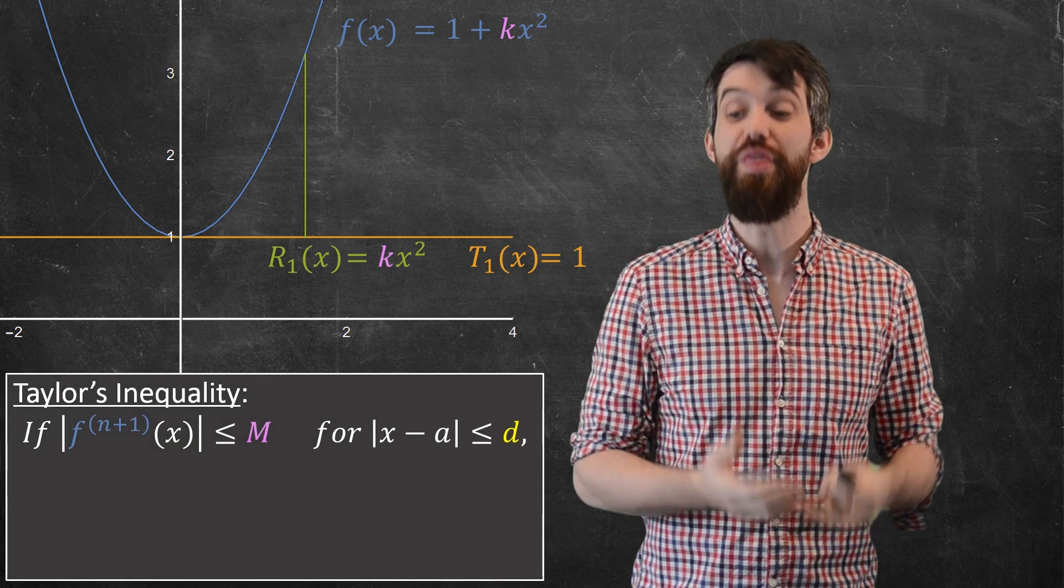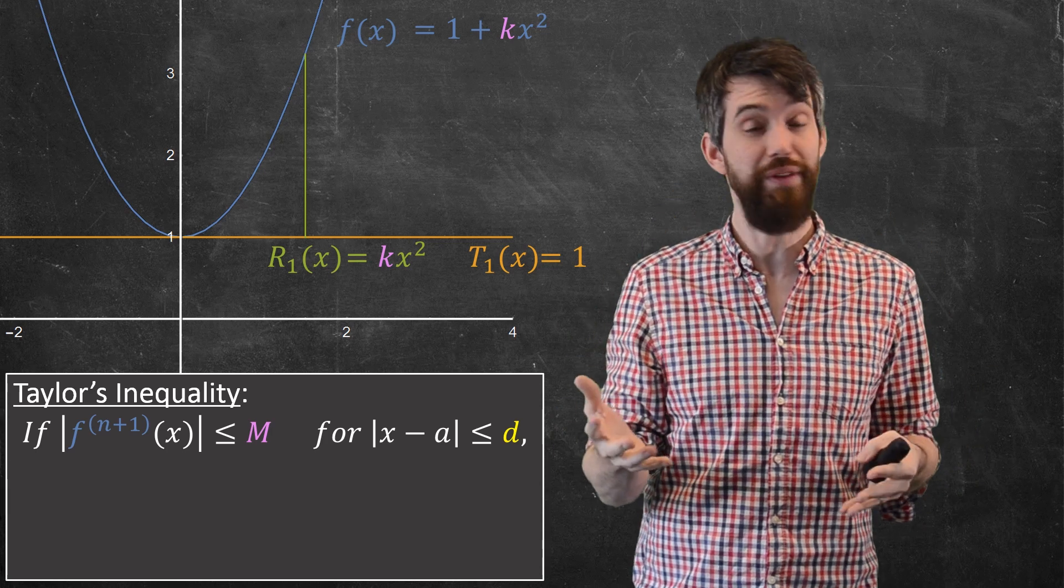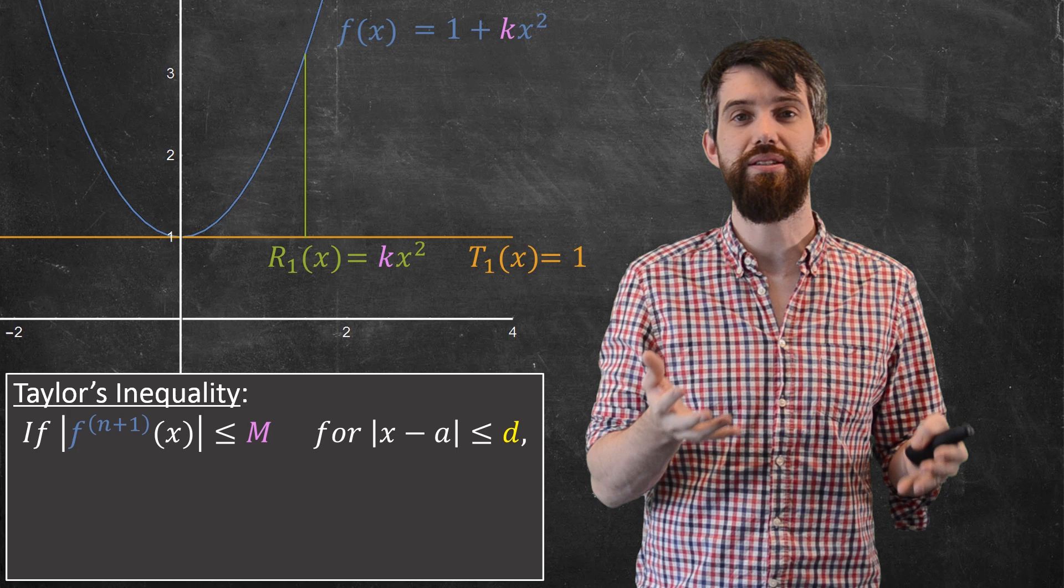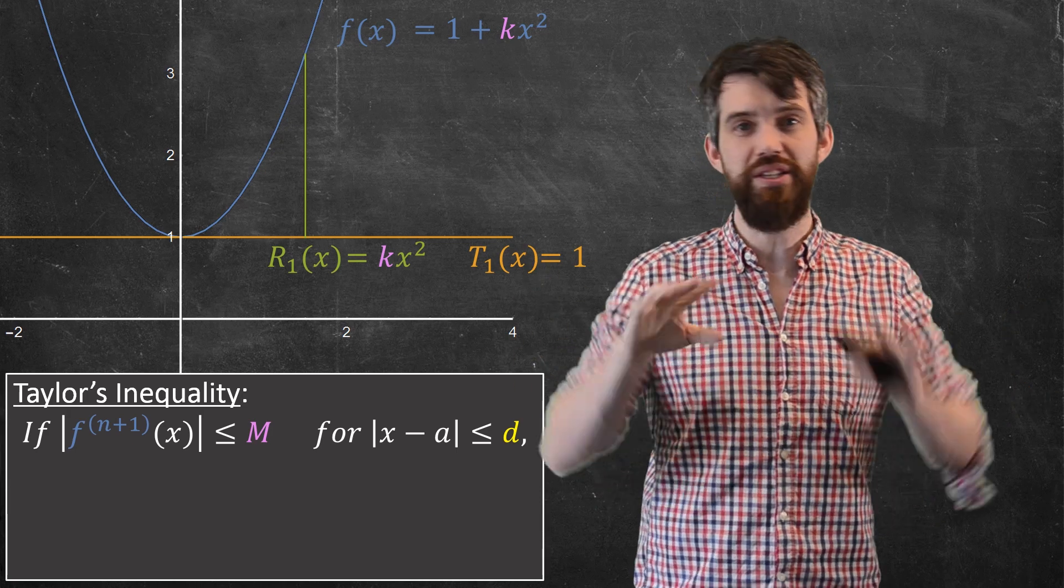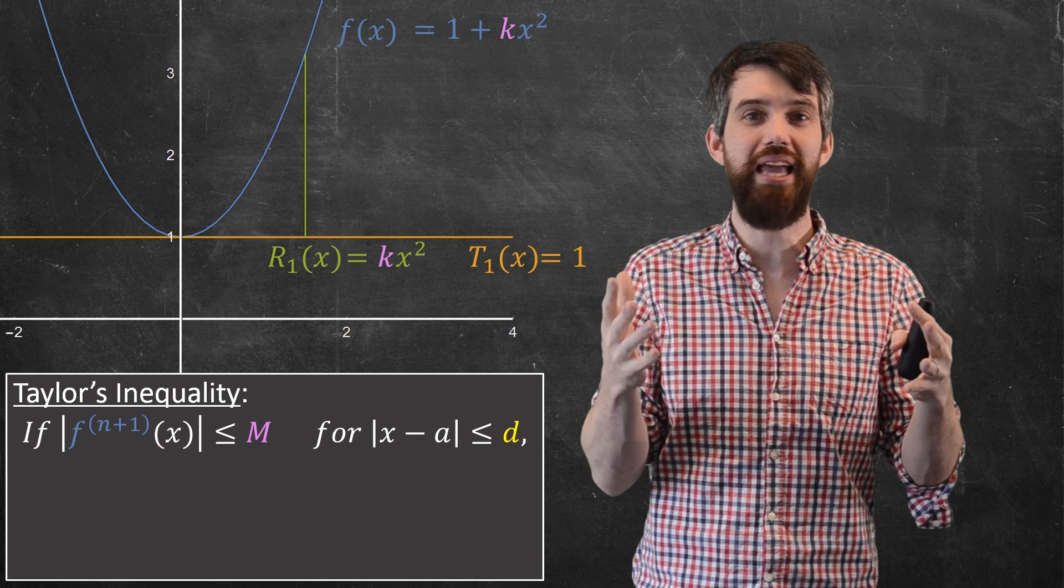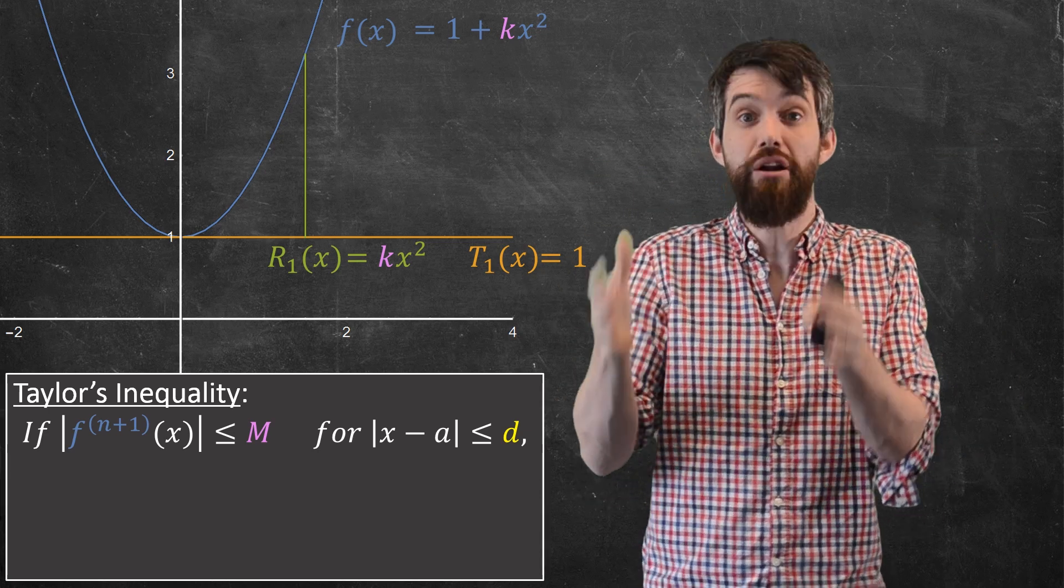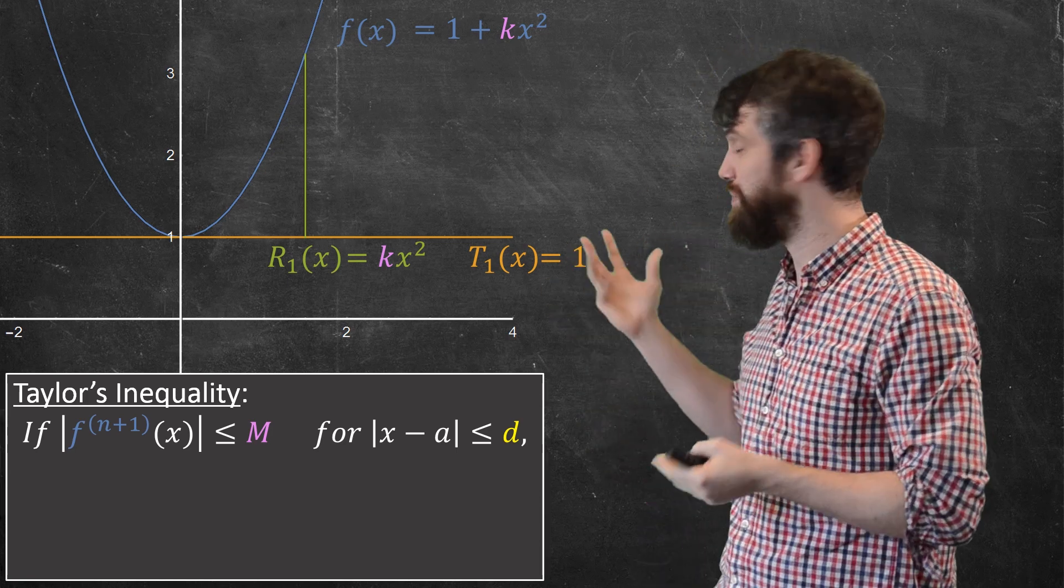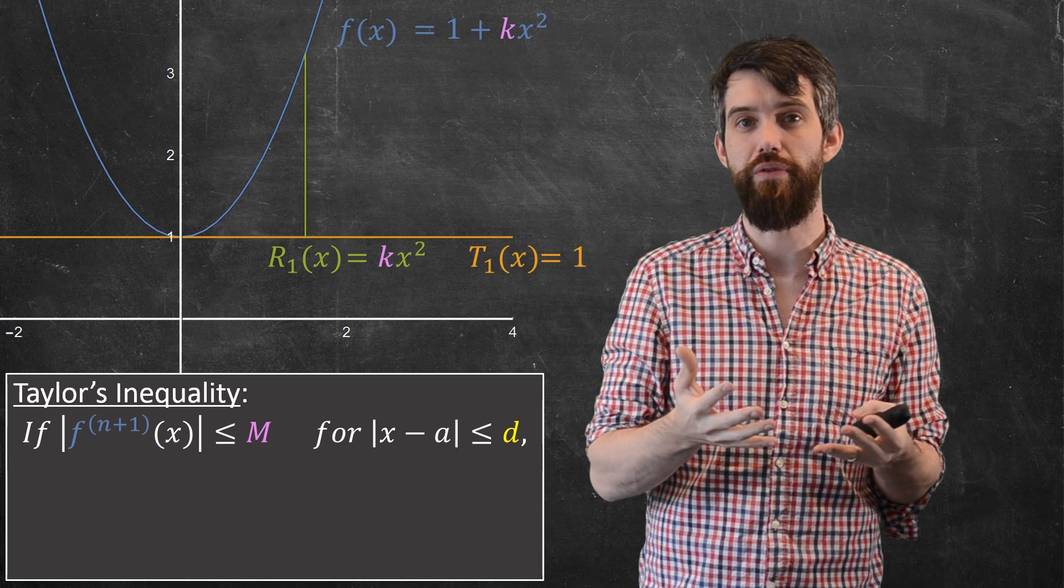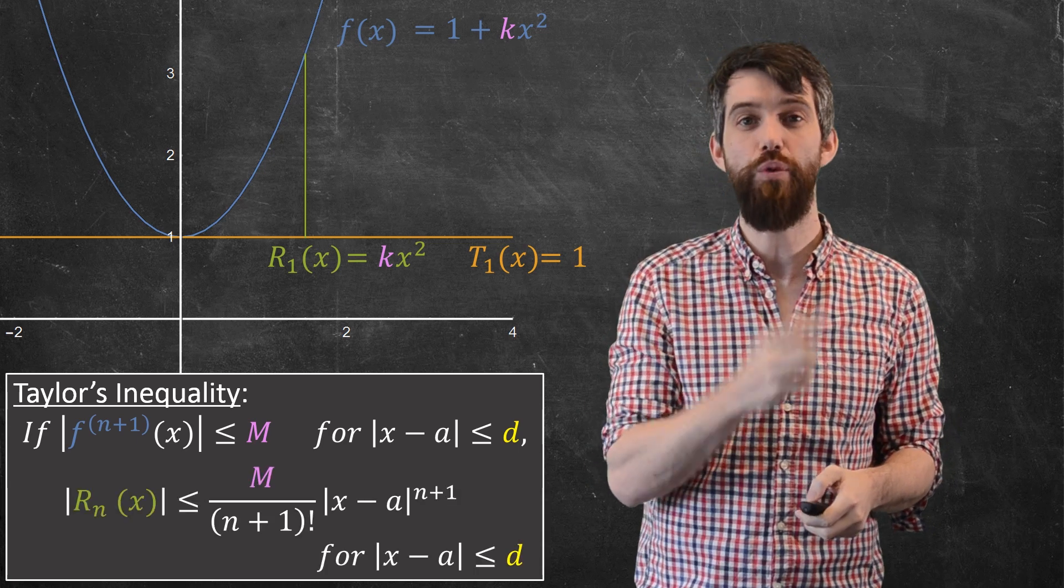All right, so let's actually see the first formula. This is Taylor's inequality. Imagine that that (n+1)th derivative is bounded. It's all less than some fixed number M, or at least it's all less than that M in some region, some |x - a| ≤ d, some number that's as close as you might need it to be. So in this narrow region, the second derivative is constrained to be some particular value, or in general, the (n+1)th derivative is constrained to be less than M. Then, if you have that, what do you get?